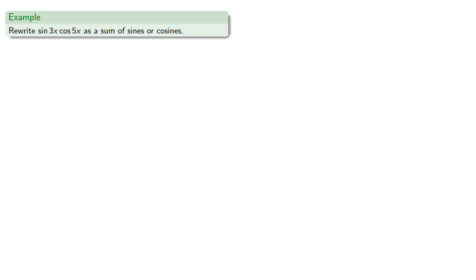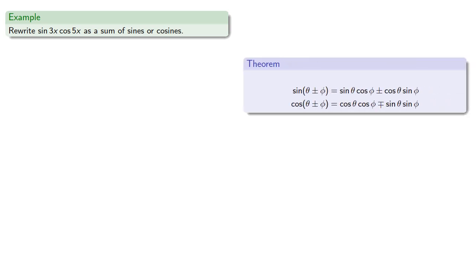So let's pull in those angle sum formulas. And we notice that this product of sin 3x cos 5x would appear in the formula for sin(3x + 5x).